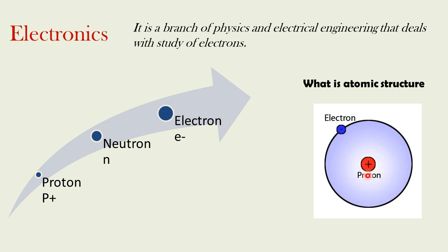This center is called the nucleus, which holds the proton and neutron, due to which it becomes positively charged. Our negatively charged electron will continuously revolve around this nucleus. This is possible because when we have two opposite charges, there is a force of attraction, and this force of attraction keeps the electron revolving around the nucleus.